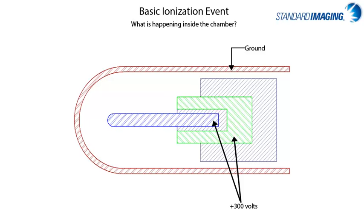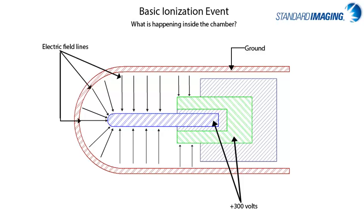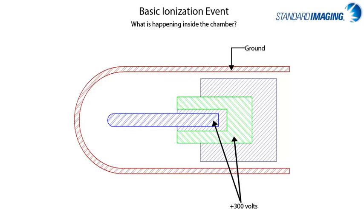For indirectly ionizing radiation, such as a photon beam, the initial event that triggers the chamber signal is the release of high-energy electrons or positrons in the chamber wall through the photoelectric effect, Compton effect, or pair production. Some of the electrons released in the chamber wall enter the collecting volume and ionize the air through Coulombic interactions with air molecules, producing low-energy electrons and positive ions. Since oxygen is an electronegative gas, the low-energy electrons attach themselves to oxygen molecules and form negative ions.